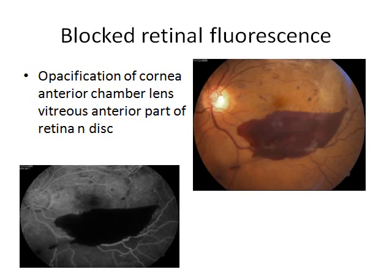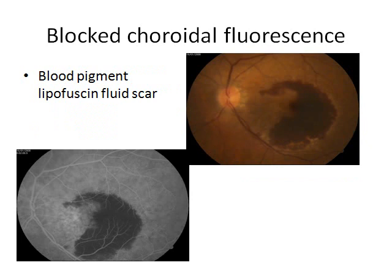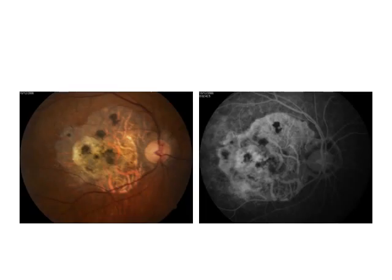Opacification of the cornea, anterior chamber, lens, vitreous, and anterior part of the retina and disc will lead to blocking of both the retinal and the choroidal fluorescence. The blocking material will correlate in size and shape to the blocked fluorescence. Any material — whether it is blood, pigment, or lipofuscin — in the deep retinal or subretinal space will lead to blocked choroidal fluorescence, with normal filling of the dye in the retinal vessels above it. This image shows blocked fluorescence due to pigment.